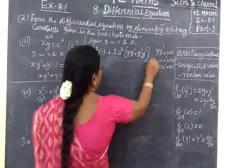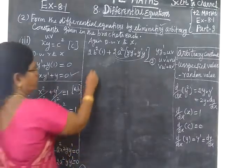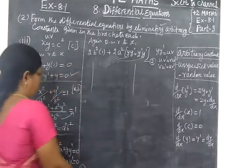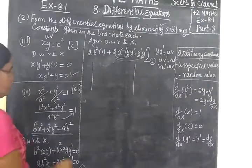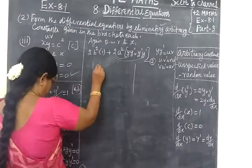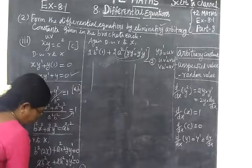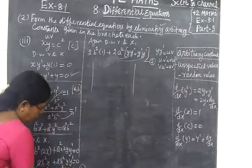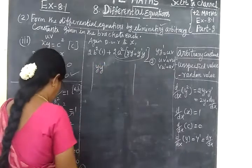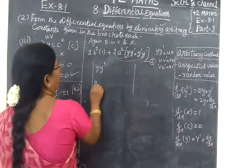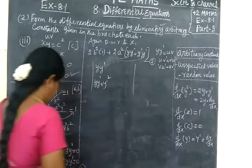Mark this as equation 2 and the previous as equation 1. We eliminate A squared: from the distribution we find A squared y y dash plus y dash squared. Then take B squared into the x term — B squared times 2 — and that is equal to 0.